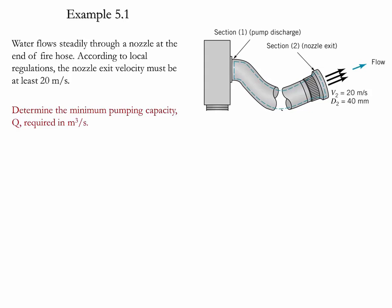We need to determine the minimum pumping capacity, Q required in meter cubes per second. Since this is a control volume problem, the first step is to draw the proper control volume. This is given by this blue line.